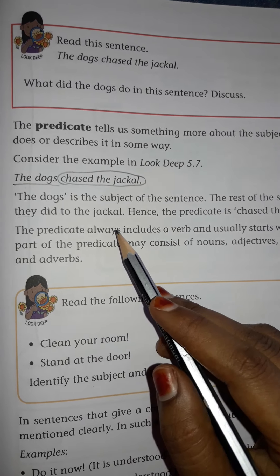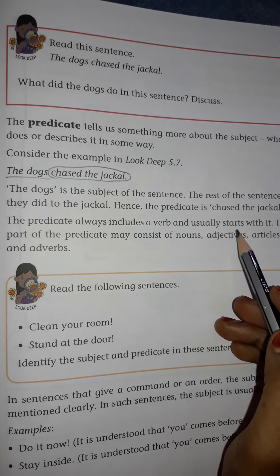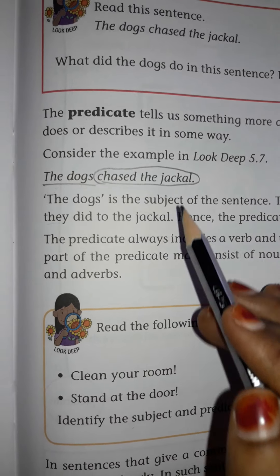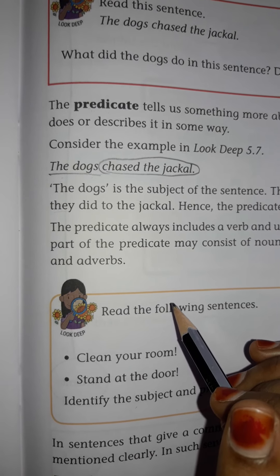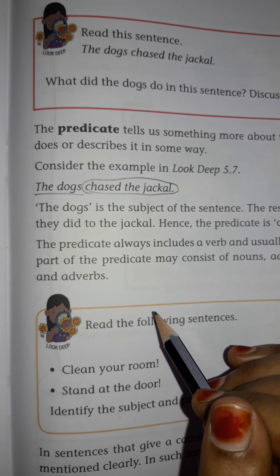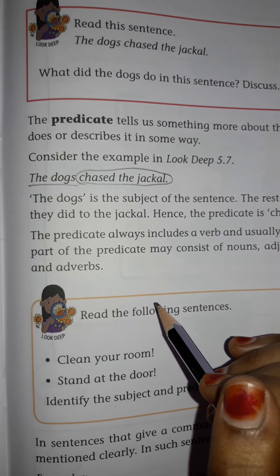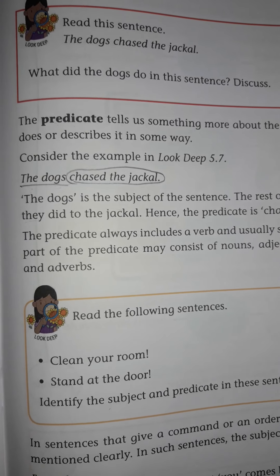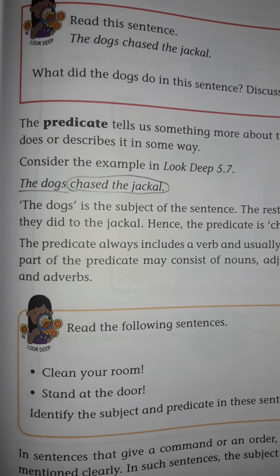The predicate always includes a verb and usually starts with it. In this sentence, what is the verb? Chased. Chased is the verb. Chased means chasing — it is an action word, that is why it becomes a verb.